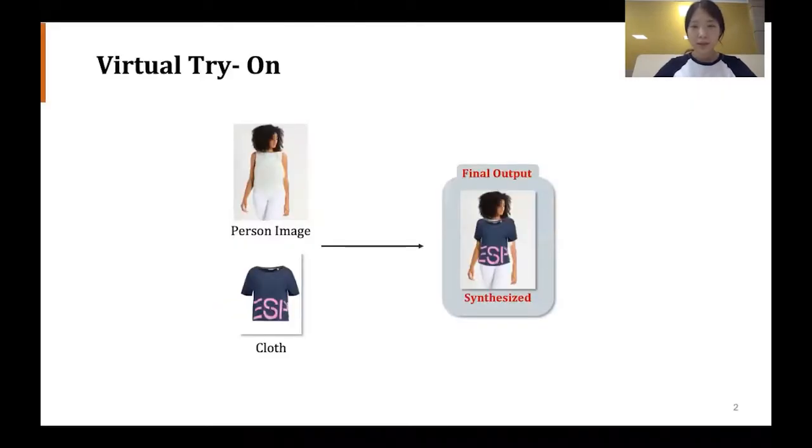Before we dive in, a little about our target problem: virtual try-on. Virtual try-on is to generate a realistic cloth-wearing image using two inputs, a person image and the cloth image.